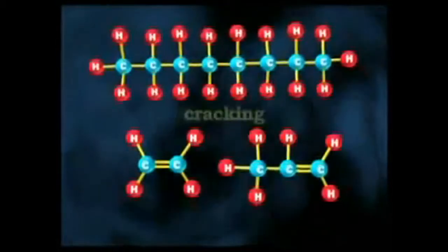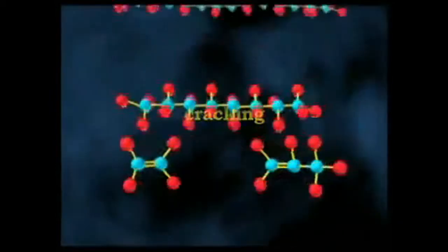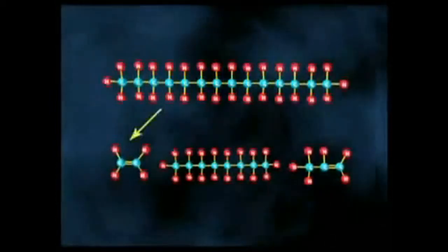A process called cracking is used to produce more of the lower molecular weight hydrocarbons. This process breaks up the longer chains into smaller ones.